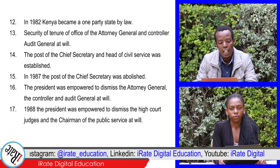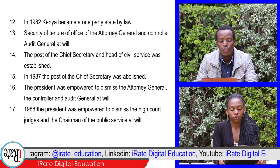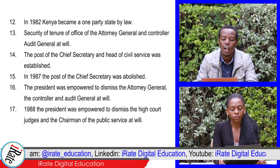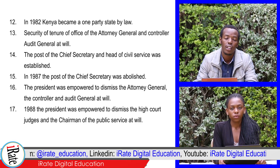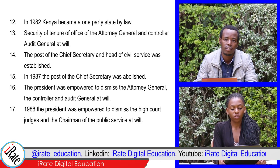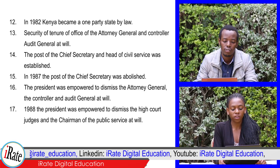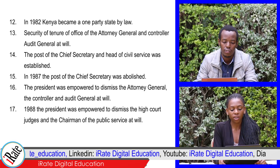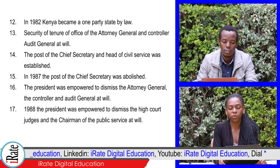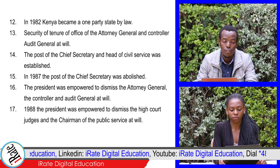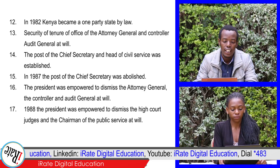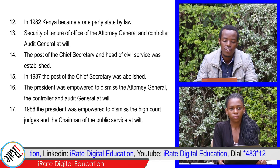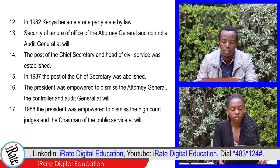13. Security of tenure of the office of the Attorney General and Controller and Auditor General was established. 14. The post of the Chief Secretary and Head of Civil Service was established. 15. In 1987, the post of the Chief Secretary was abolished.